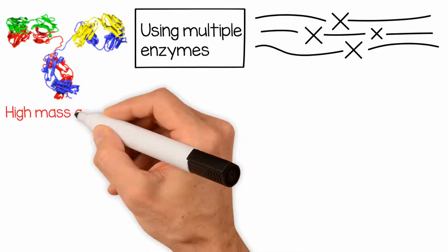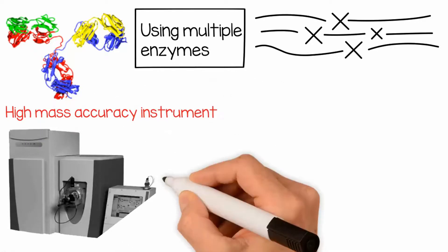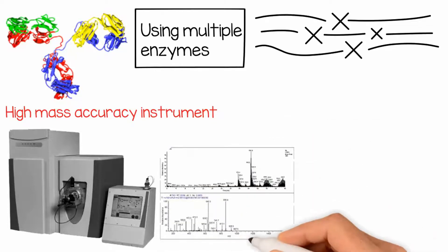Then, we run the samples through a high mass accuracy instrument. In our case, that would be a Thermo Q Exactive Orbitrap, and generate hundreds of thousands of tandem spectra.